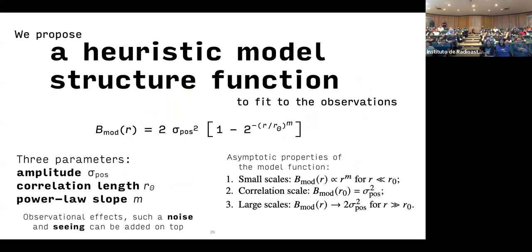The main model thing of our approach is that we're going to use a heuristic model of the structure function, inspired by something I saw in an old article by Scalo, 1985. We're going to use this very simple model. It's only got three parameters: the amplitude of the fluctuations sigma, the correlation length, and the power law slope.